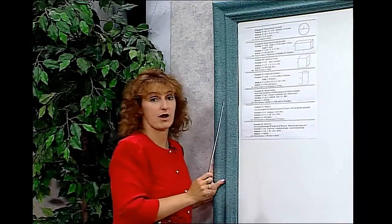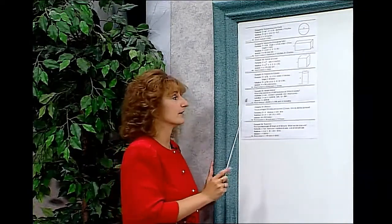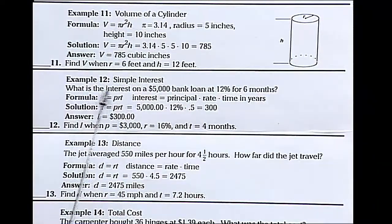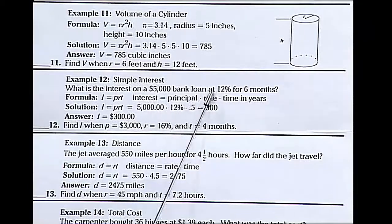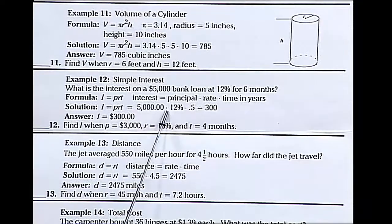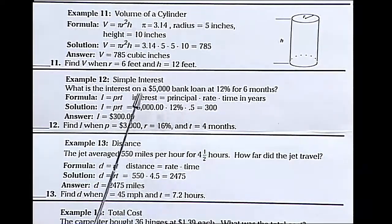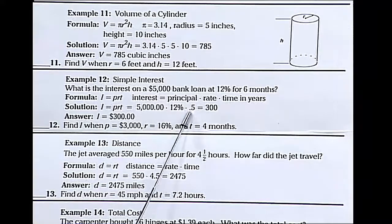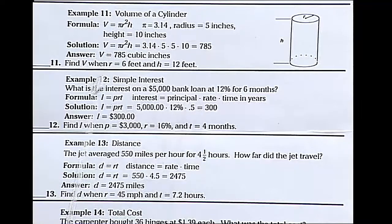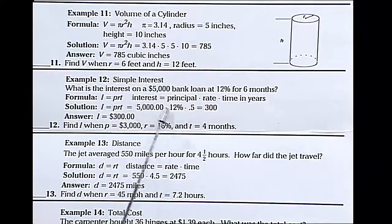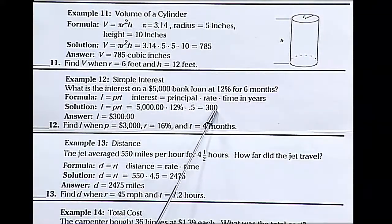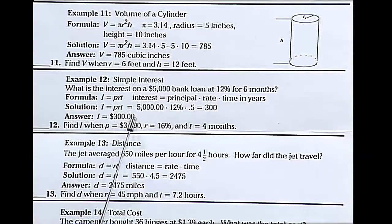Let's try a simple interest problem. You remember that formula as interest equals principal times rate times time. We need to find the interest on a $5,000 bank loan at 12% for 6 months. The principal is 5,000, the rate is 12%, the time is 6 months, which is one-half or 0.5 years. 5,000 times 12% times 0.5 equals 300. We're speaking about money, so we label our answer $300.